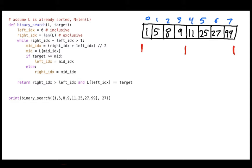I'm looking for 27 and the middle value is 11, so 27 is bigger. That means if 27 is in the list it has to be on the right-hand side, so I move the left end of the range to the middle. In the second iteration, I find the new middle and compare 27 again — 27 is greater than or equal to the middle value of 27, so I know it's on the right-hand side again. You could imagine returning early if you find it, but let's follow exactly what the code does and keep narrowing it down.